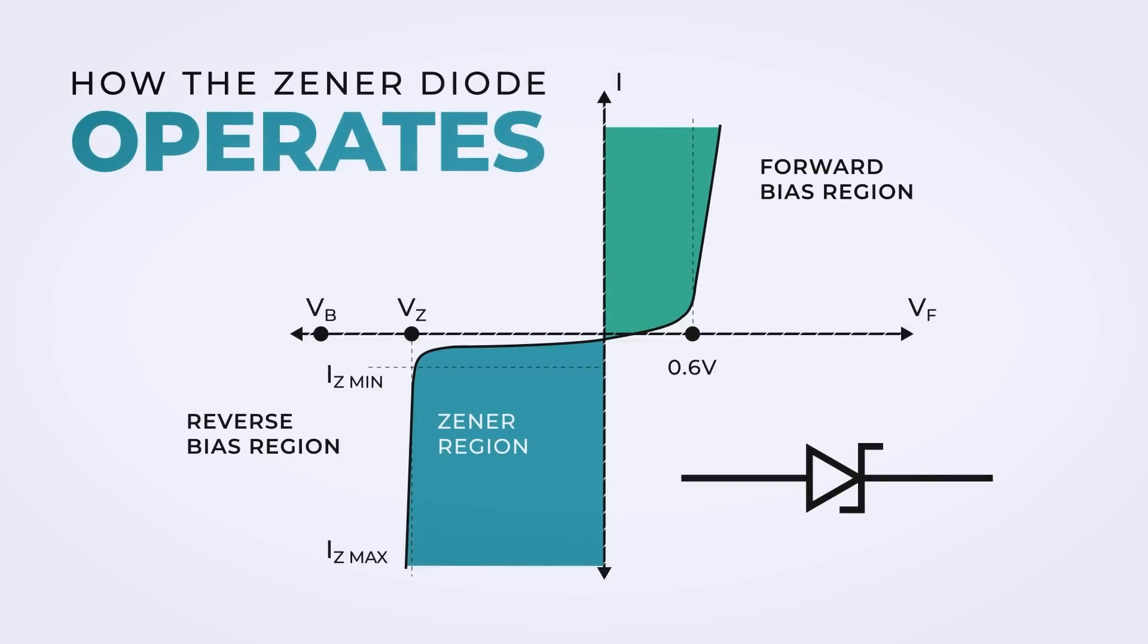Now for some explanations. The Zener diode can operate in both forward and reverse voltages. In the forward bias, the Zener operates just as a regular diode.